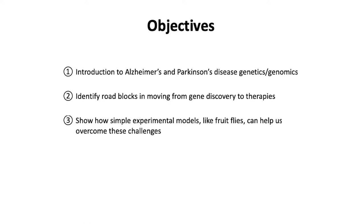My objectives today: I'm going to introduce Alzheimer's disease and Parkinson's disease genetics and genomics, overlapping with what Dr. Ramirez just told you. Then I'll talk about the specific challenges and roadblocks that stand in the way of going from human genetics to new drugs and understanding new biology. Lastly, I'll show how simple experimental models like the fruit fly can help us overcome these challenges in ways other systems sometimes can't.